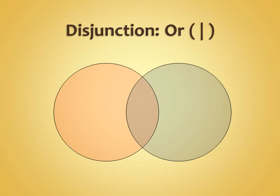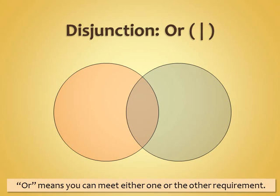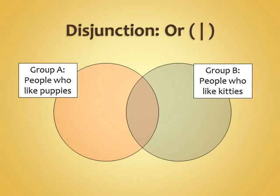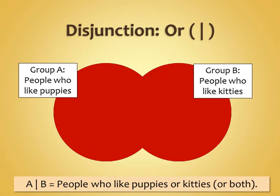Now, disjunction is OR. This is the little bar character — shift key over your enter sign, probably. Some people call it a pipe. OR, if you're thinking about Venn diagrams, means that you can meet one or the other of the requirements but you don't have to meet both. That would be OR — literally filling the whole Venn diagram in. So if you have a group of people who like puppies and a group who like kitties, then A OR B would be the people who like puppies, kitties, or both.